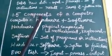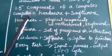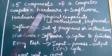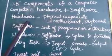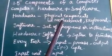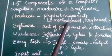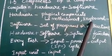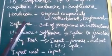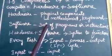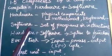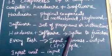Next, components of a computer: computer components are hardware and software. Hardware refers to physical components we can see — such as motherboard, keyboard, mouse, scanner, and monitor. Software is a set of programs and instructions. Hardware and software together form the computer system function.